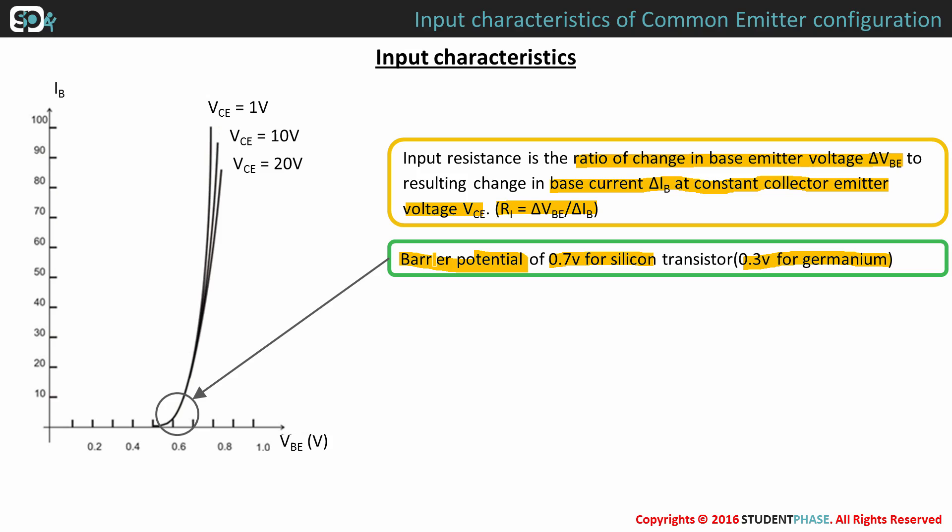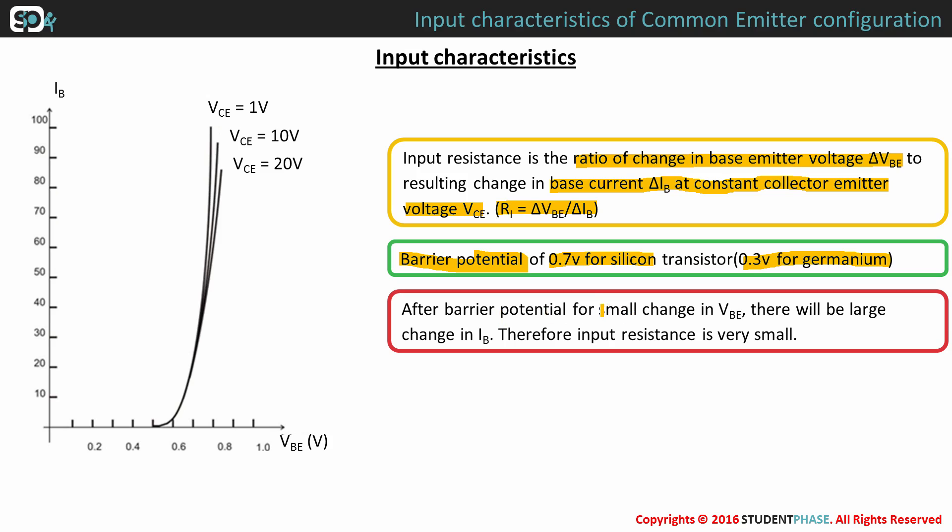This is called barrier potential. And this is that region where VBE exceeds 0.7 volts and starts conducting. After barrier potential, small change in VBE results in large change of IB. This means VBE has changed very little here.